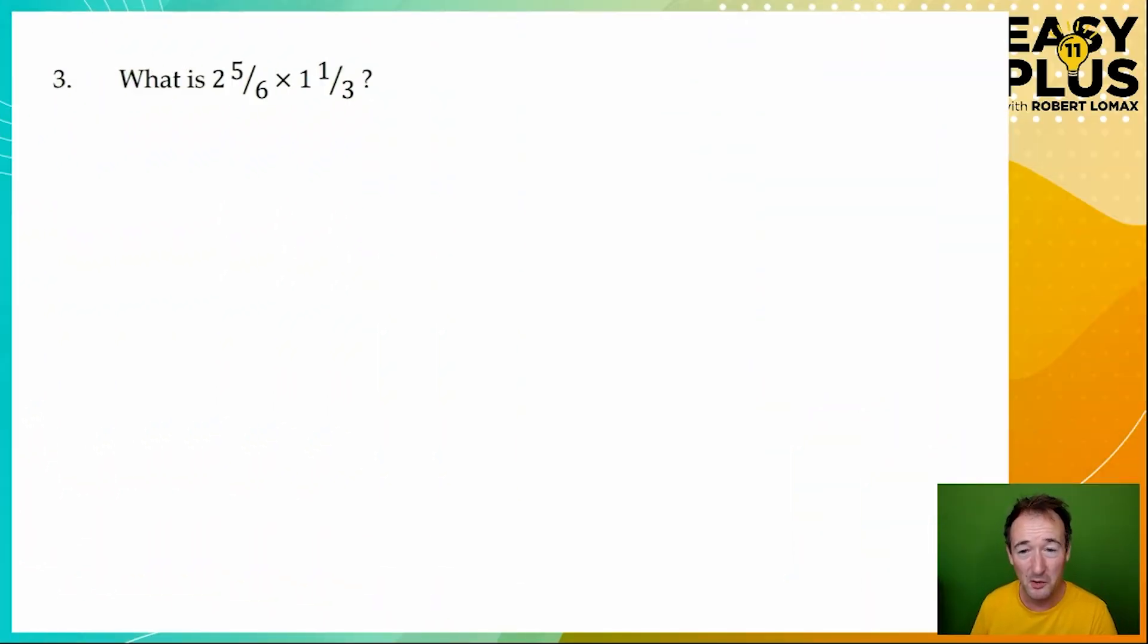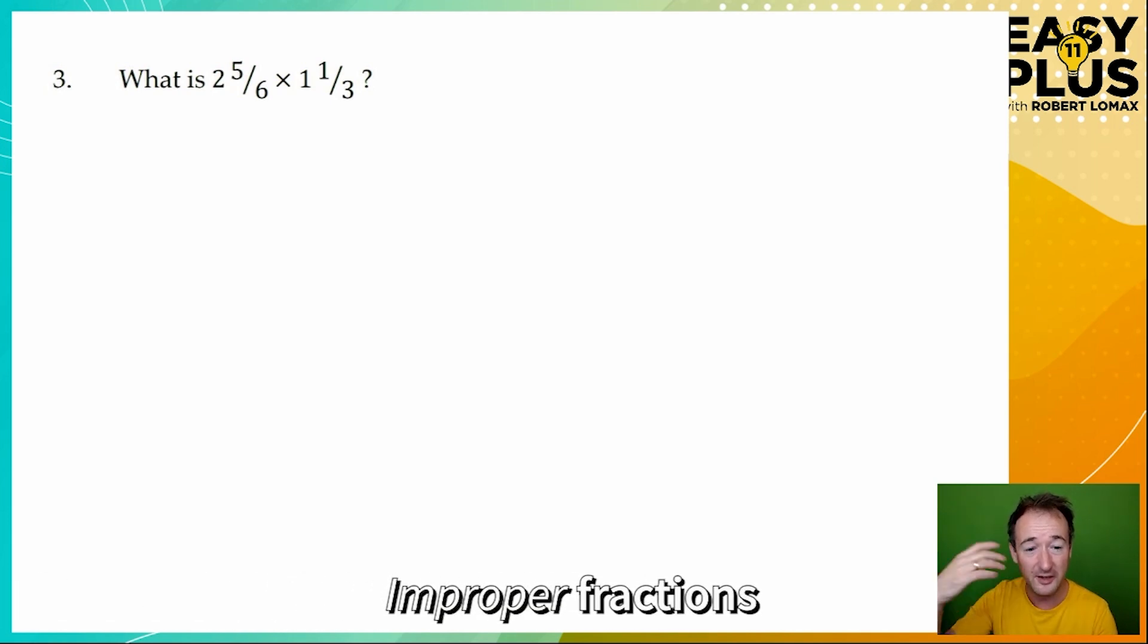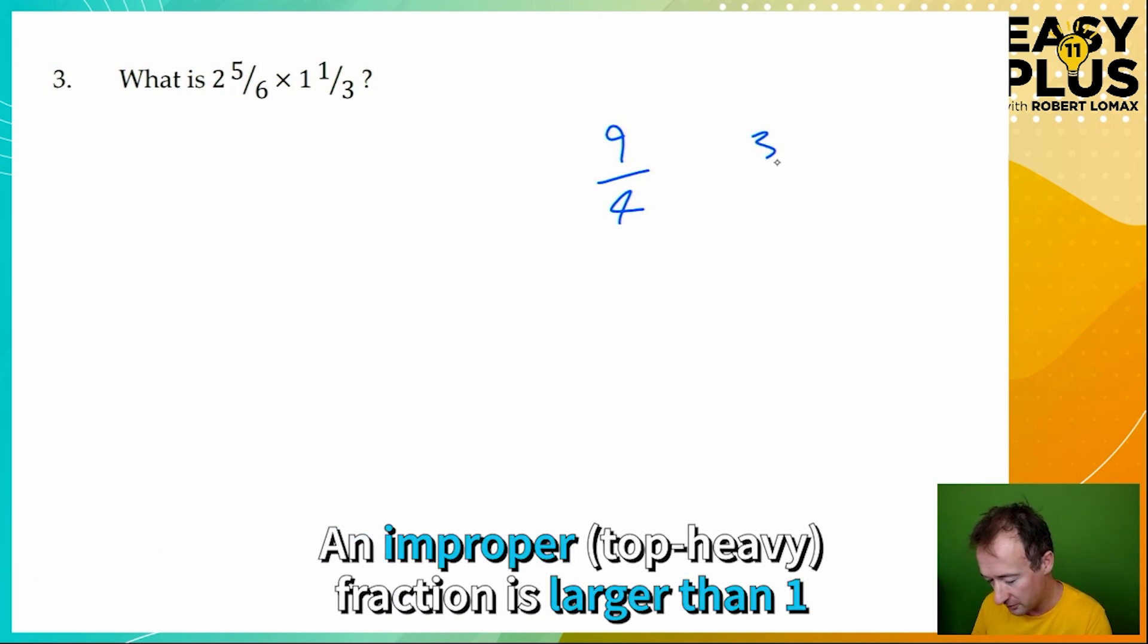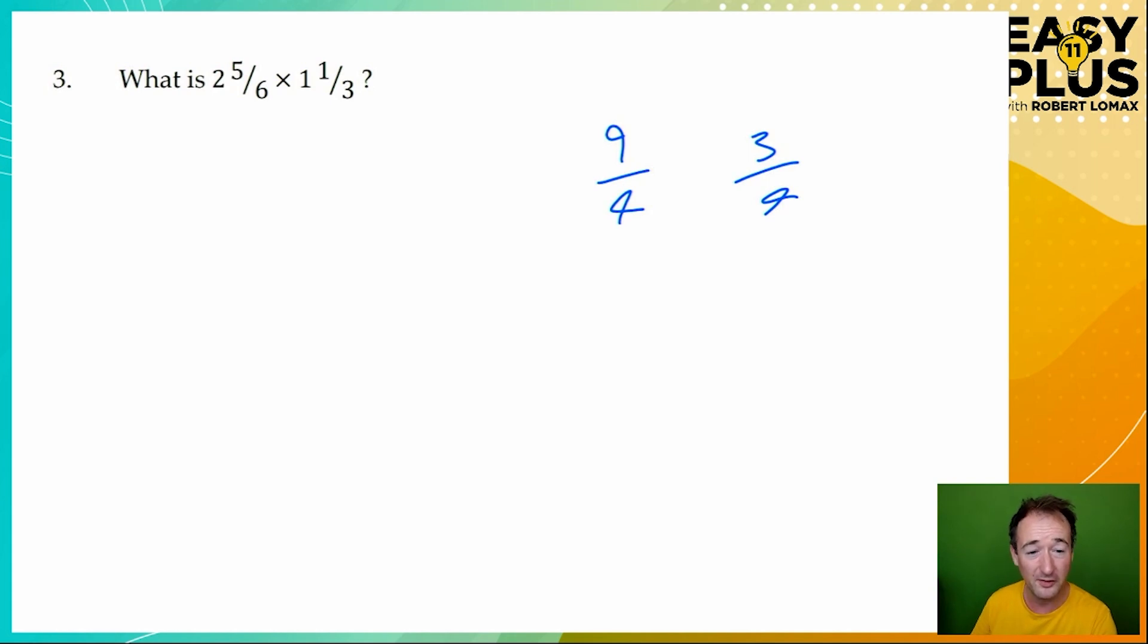Now we've got a very similar problem, but with mixed numbers. And if you try to multiply this while leaving the whole numbers and the fractions separate, you're going to end up with a real mess. What you have to do instead is turn each mixed number into an improper fraction. And an improper fraction is a fraction where the top number is larger than the bottom number. A fraction such as nine over four, for example, would be an improper fraction. And when you see a fraction like that, you know you're talking about a number that's larger than one. Whereas, for example, three over four, the top number is smaller, so this is a number that's smaller than one. One itself would be four over four. Okay, so let's look at two and five-sixths first of all.